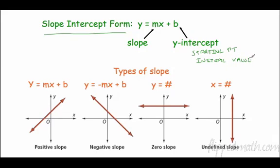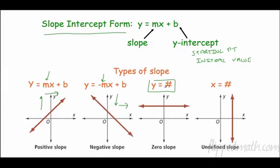Remember the different types of slope. If m is positive, the line always goes up and to the right. If m is negative, it always goes down and to the right. If you have y equals just a number — no x variable — there's no slope; it's a zero slope and that's a horizontal line going left to right. For example, y equals 2 would be a horizontal line at y equals 2.